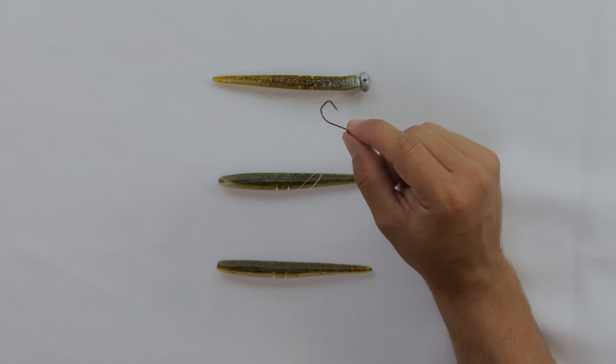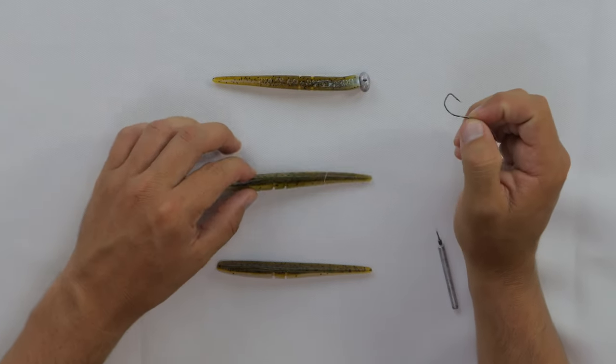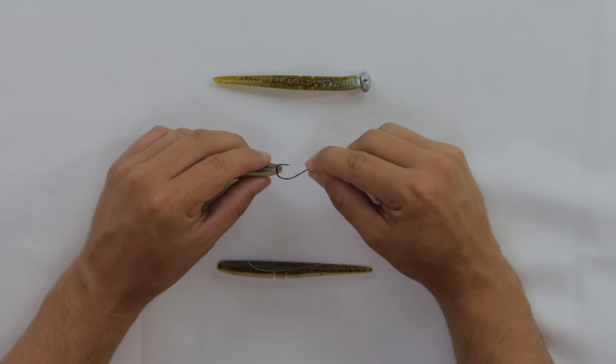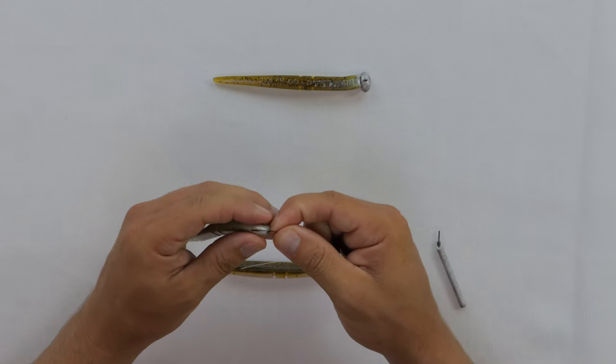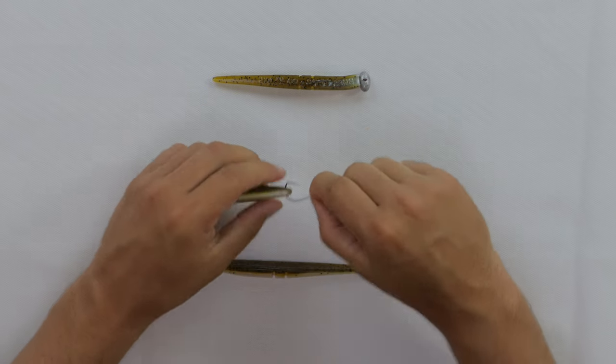The reason I'm opting for the 1-0 instead of the number two is because this is a little bit bigger bait, a little bit fatter head, and I want to have enough room when I nose hook this so that the hook is exposed and the fish can get hooked easily.